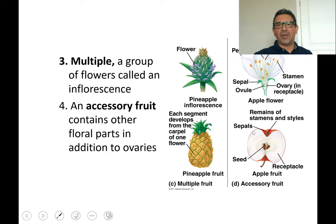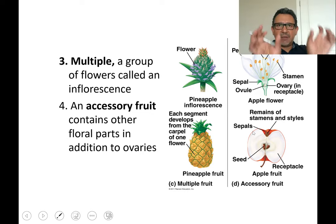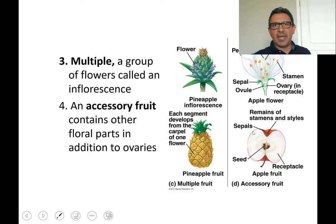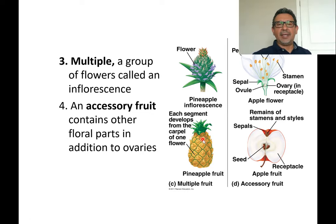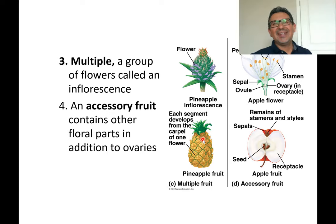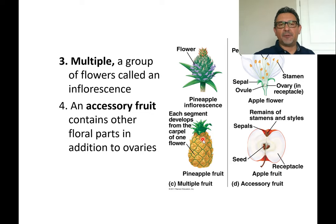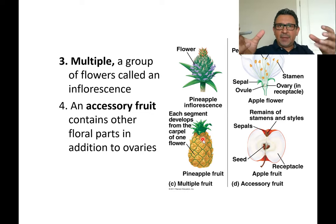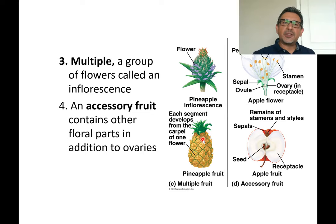Multiple fruits develop from an inflorescence — many flowers from one receptacle. Each flower has its own carpels, and eventually the carpels fuse, making it hard to distinguish where one fruit begins and another ends. Examples of multiple fruits include pineapple, jackfruit, and figs.